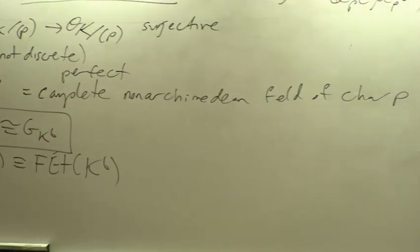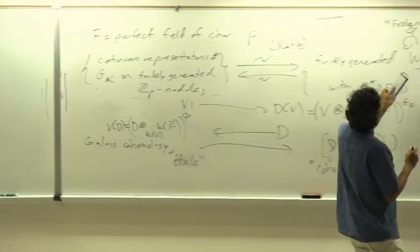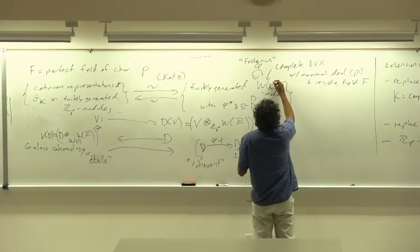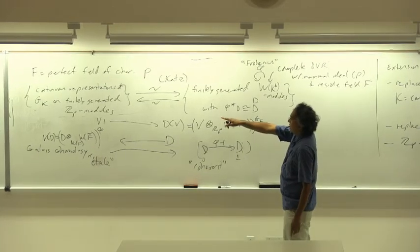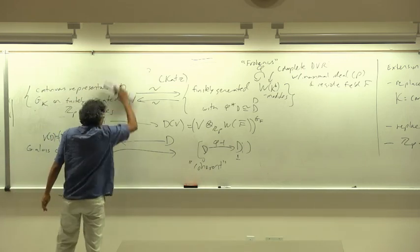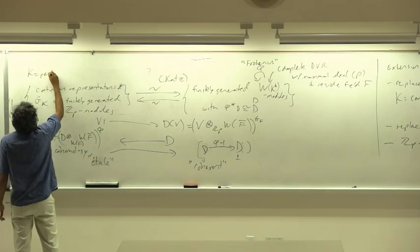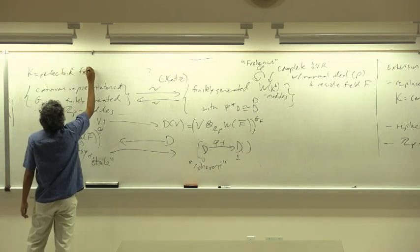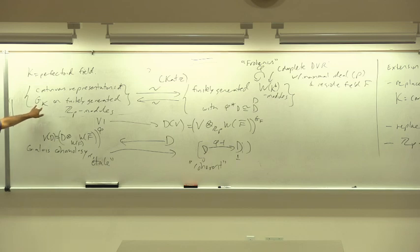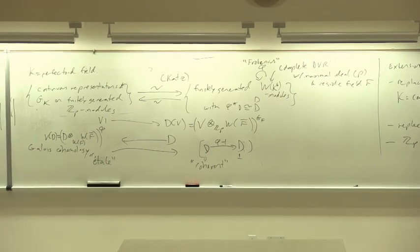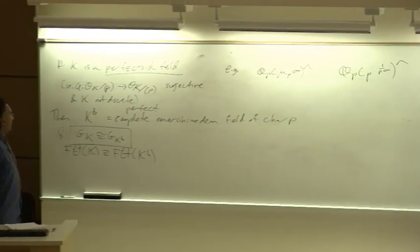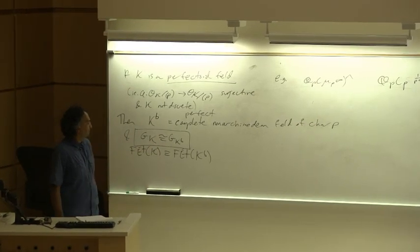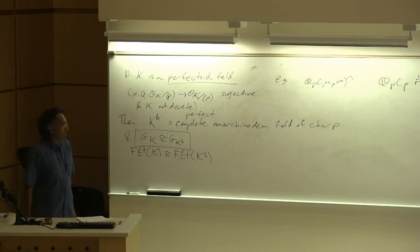This is somehow the vast generalization of the Fontaine-Wintenberger field-of-norms correspondence that came up this morning, which is sort of included in the almost purity theorem. So this means that if K is itself perfectoid, then G_K is the same thing as G_{K-flat}. I can just substitute K-flat into the previous theorem and read f equals K-flat everywhere.